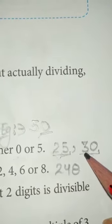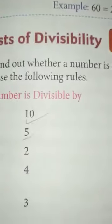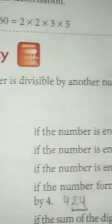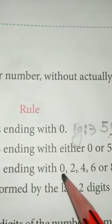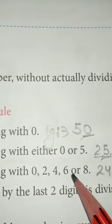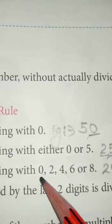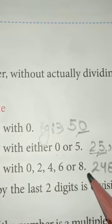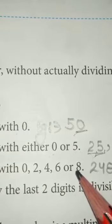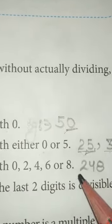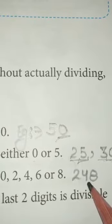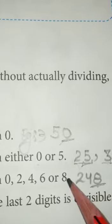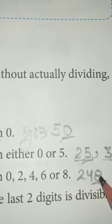Next is the divisibility rule for 2. The rule is: if the number is ending with 0, 2, 4, 6, or 8, it means that number is divisible by 2. Like 248 — it is ending at 8, which means this number is divisible by 2.